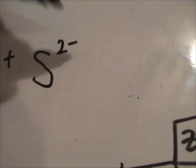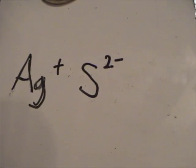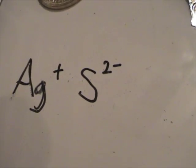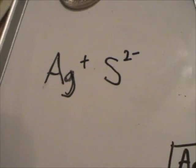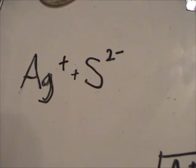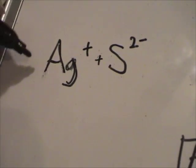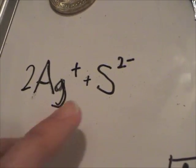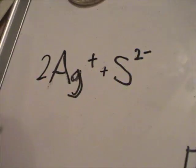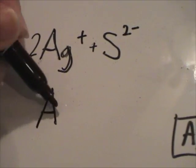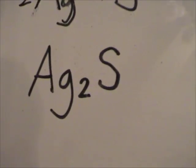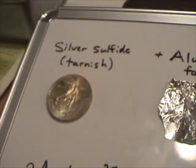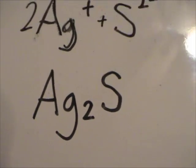Remember sulfide always forms a negative two charge because it's in group 6A. It wants to gain two more electrons to get that happy octet of eight. So we're going to have silver ions plus sulfide ions. You're going to need two silver cations to balance out that negative two sulfide charge. So the formula for silver sulfide is Ag2S because all ionic compounds are neutral.